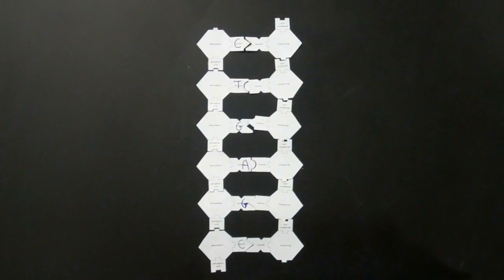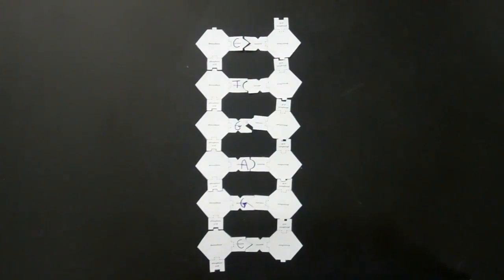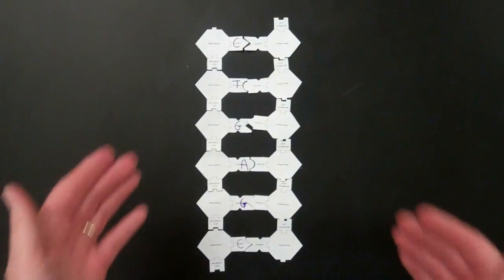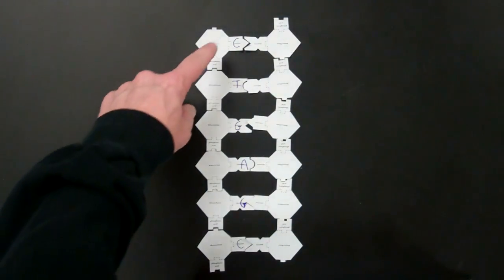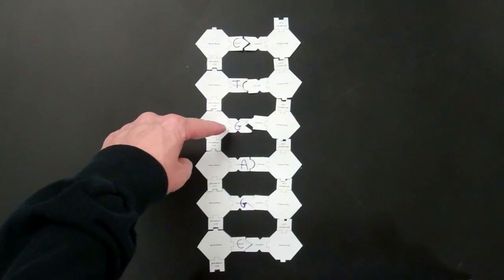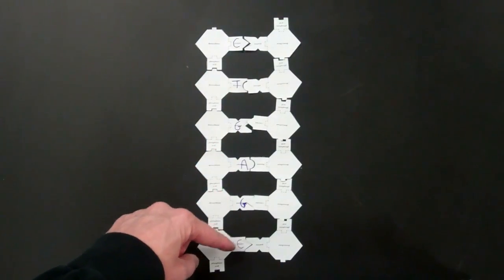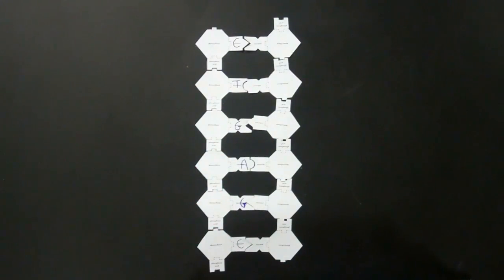Now we'll continue with our paper model. This is a DNA molecule. The code is CTGAGC on the left. So after the DNA unwinds, the next step, the second step, is to unzip the molecule.